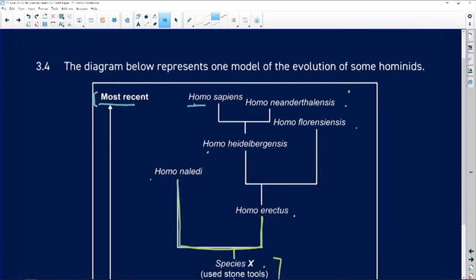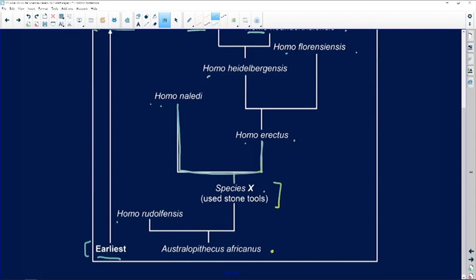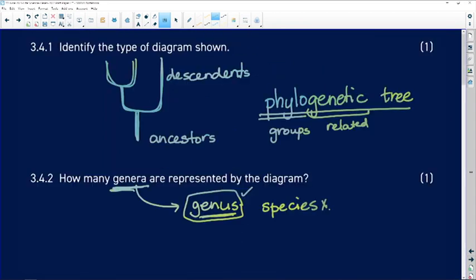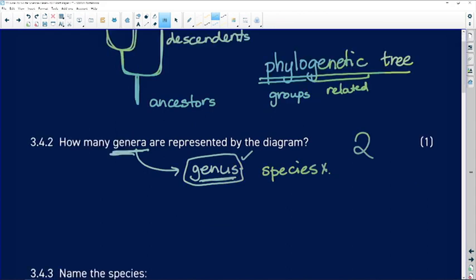Here's the genus name. Homo, there's Homo, all of those have the genus Homo and here we've got genus Australopithecus. So getting back to our question, how many genera are presented or represented? We've got two. We've got Homo and we've got Australopithecus.